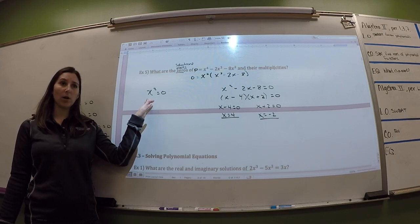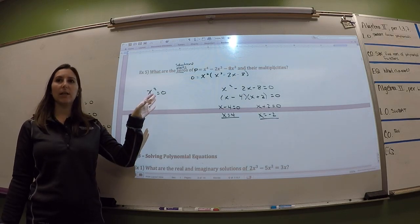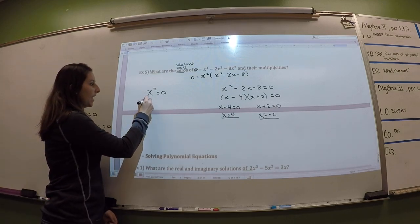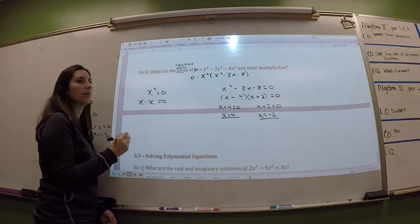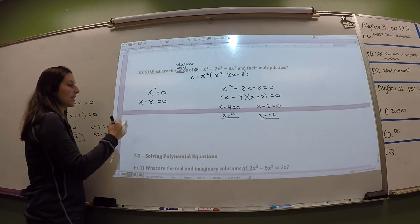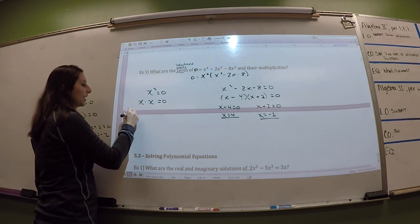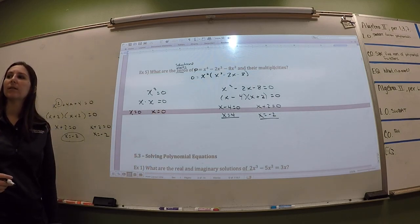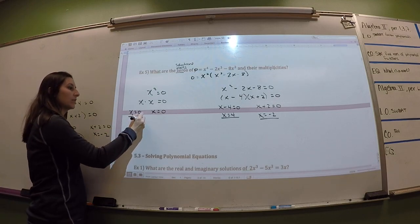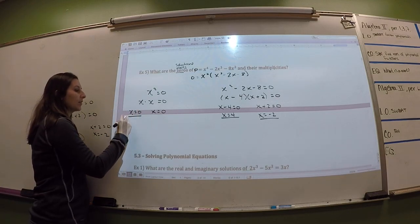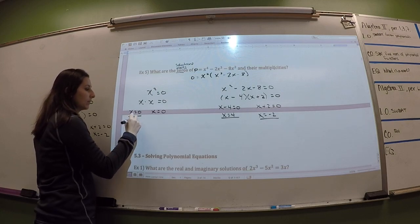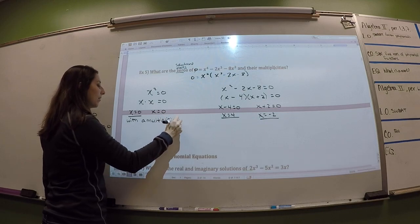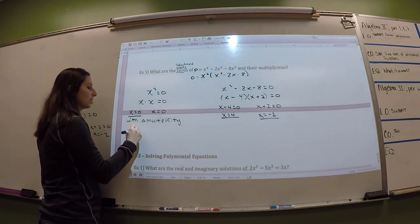Going back to the x squared part: technically, if x squared equals zero, that means x times x equals zero. So by the zero product property, I can take each one and set it equal to zero, and I get two of the same answer. You would say you get zero. You can square root both sides too. With a multiplicity of two — another way of looking at it is you would square root both sides, and you get plus or minus, but there's no positive and negative zero, so you still get two solutions from it.